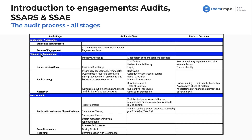Once the engagement has been accepted, we want to start planning. We want to understand the client and the particular risks within that one client. We want to gain knowledge about the industry — are they in manufacturing, tech, restaurant/food services, financial services? We must tour their facilities, review their financial history, and inquire of employees to get an understanding. We also want to document any relevant industry, regulatory, and other external factors, and understand the nature of the entity — what they do.